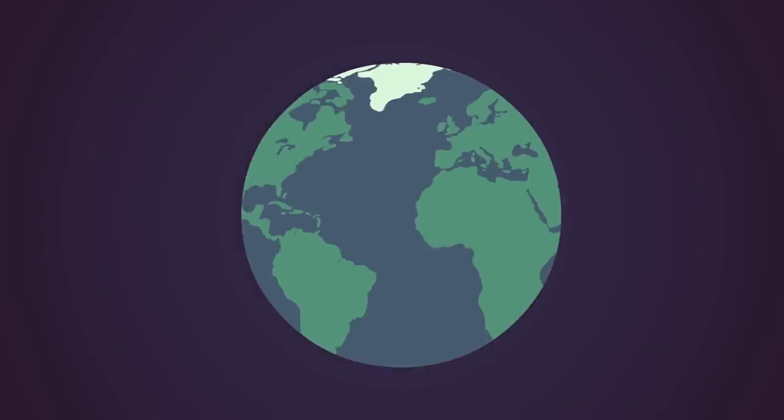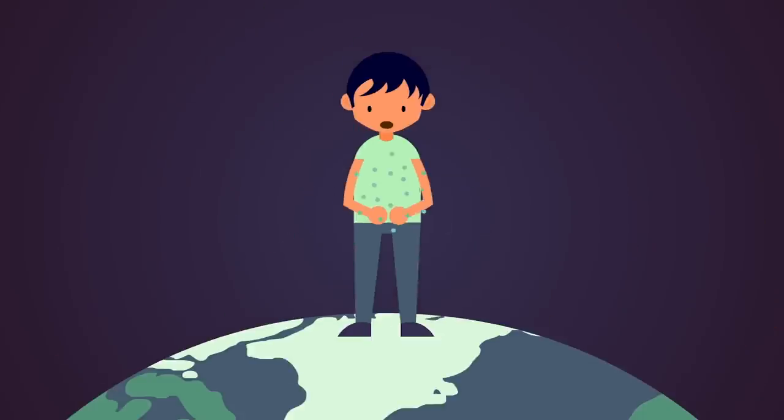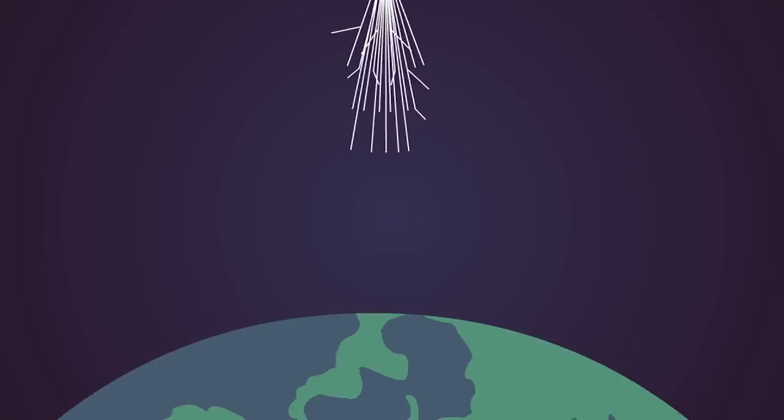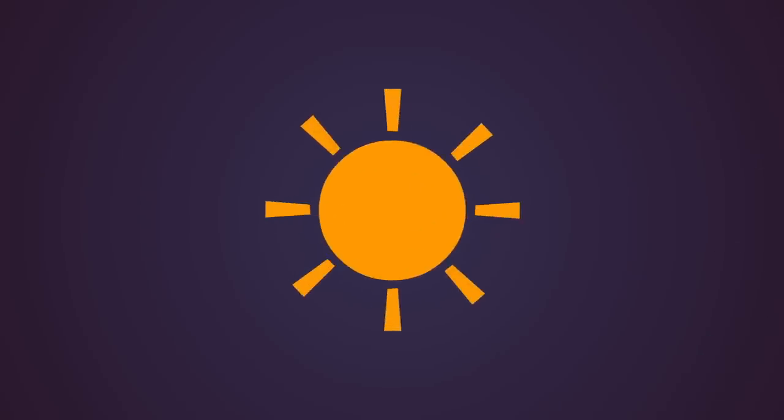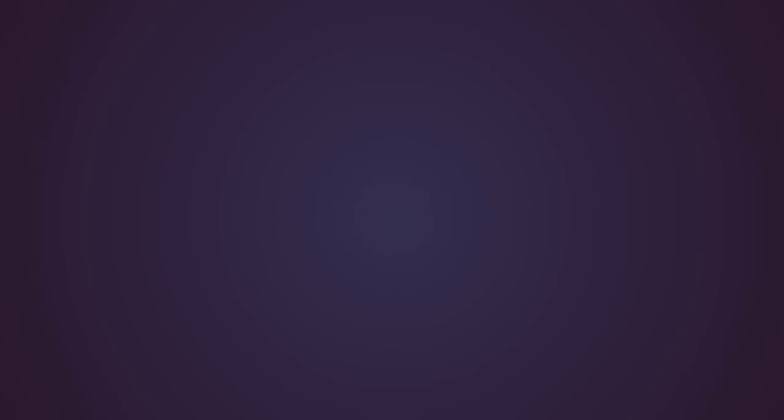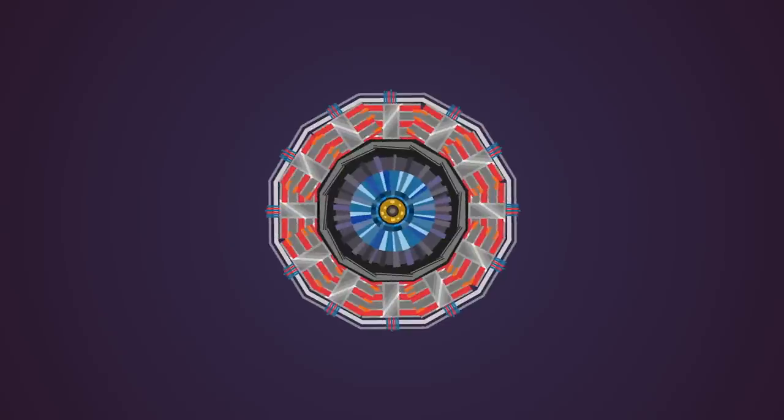So where do they come from? Pretty much everywhere. They're produced in your body from the radioactive decay of potassium. Cosmic rays hitting atoms in the Earth's atmosphere create showers of them. They're produced by nuclear reactions inside the Sun, and by radioactive decay inside the Earth. And we can generate them in nuclear reactors and particle accelerators.